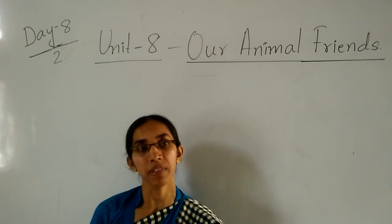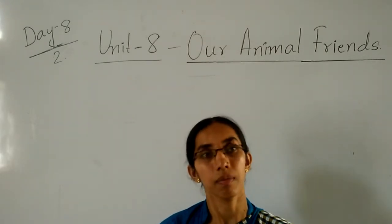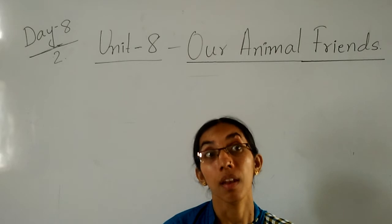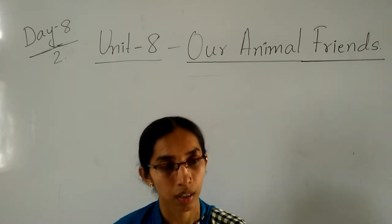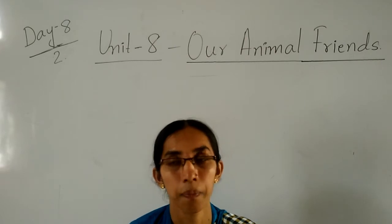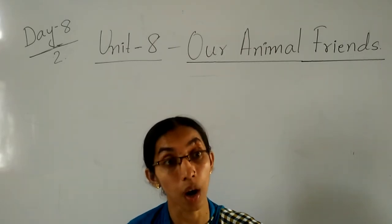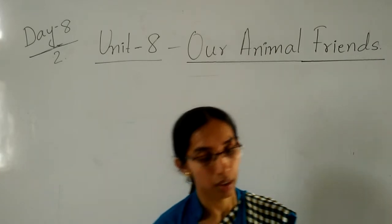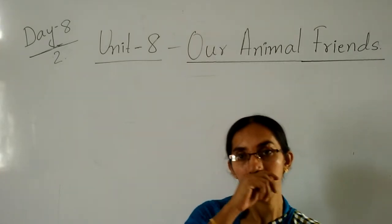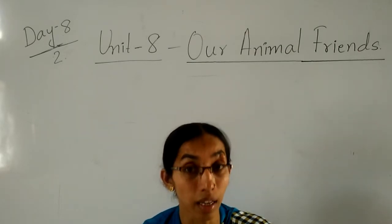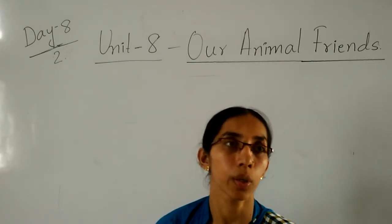Which animals have rough skin? Lizard. Very good. Smooth skin — frog. Very good. Which animals have a shell? Crab and snail. Very good.